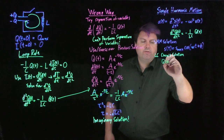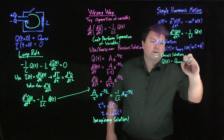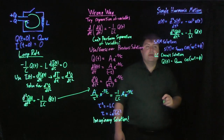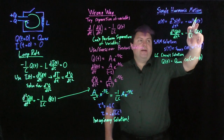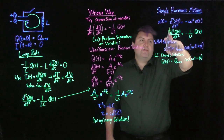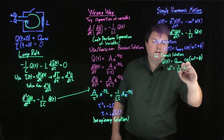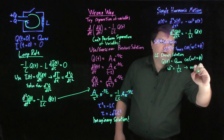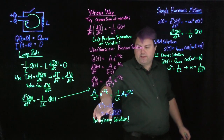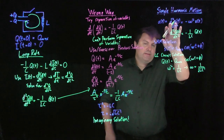Our LC circuit solution must be q(t) = Q_max·cos(ωt + φ). Comparing the two equations — noting the negative sign, no powers, and two second derivatives — we find that ω² = 1/LC, or ω = 1/√(LC). This is similar to what we found for τ, but now it's for a real angular frequency ω, which makes physical sense.